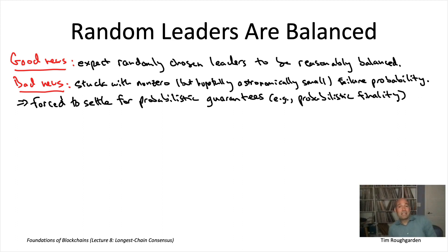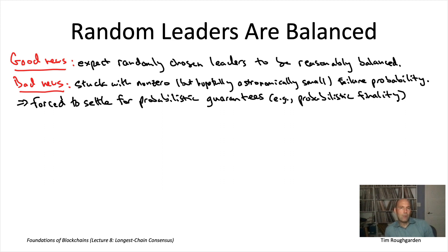Probabilistic guarantees are basically as good as probability-one guarantees if the failure probability is sufficiently small. If the chance of something going wrong is smaller than the chance of being hit by an asteroid in the next 24 hours, maybe that's actually as good as a deterministic guarantee. I'm not going to go through a rigorous proof here, though it wouldn't necessarily be harder than other proofs in this lecture series. Hopefully I can give you a good intuitive sense of how the analysis would go.